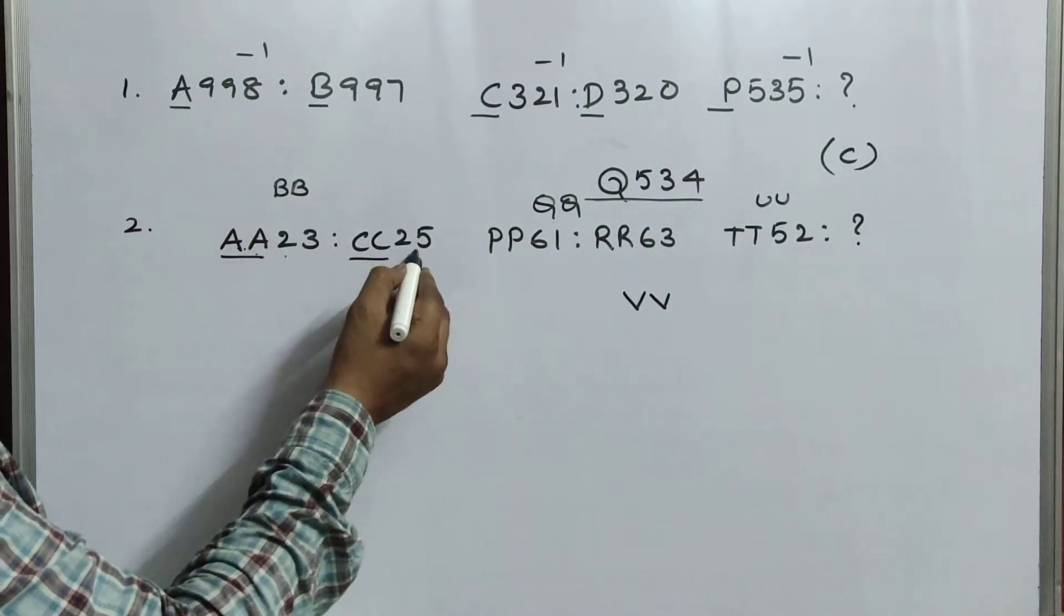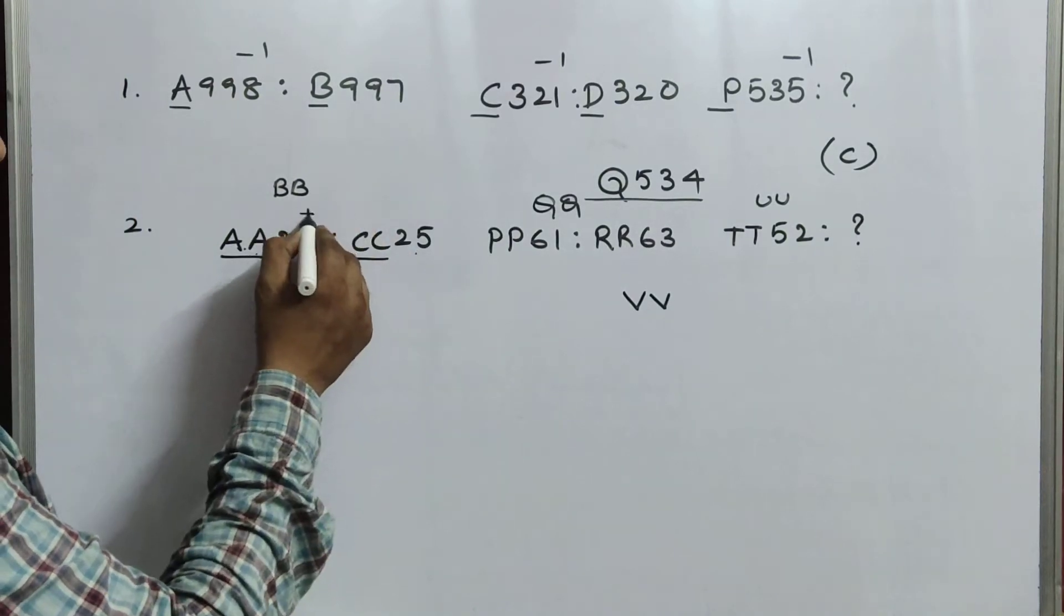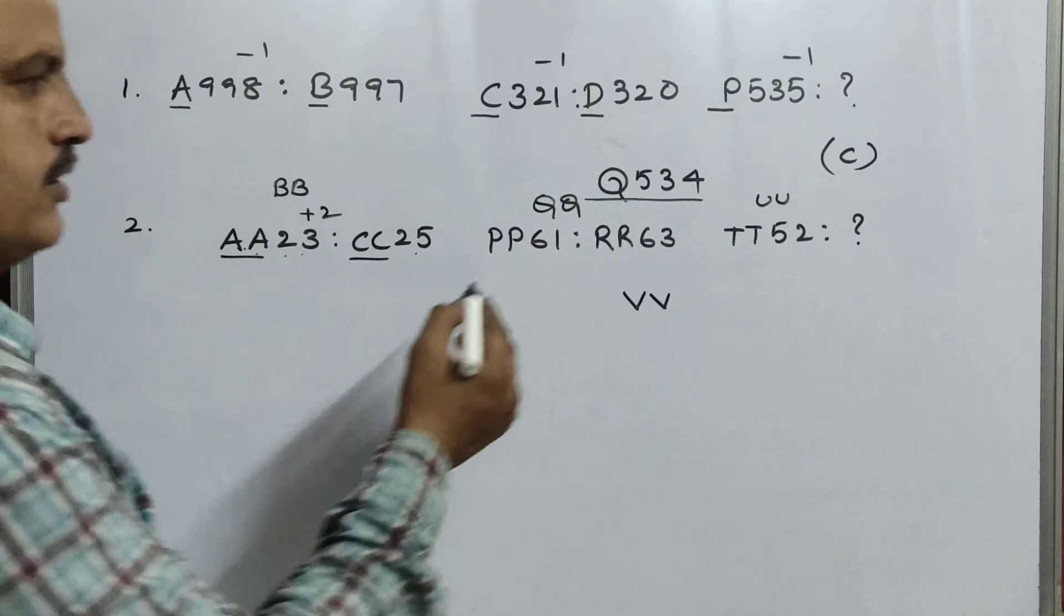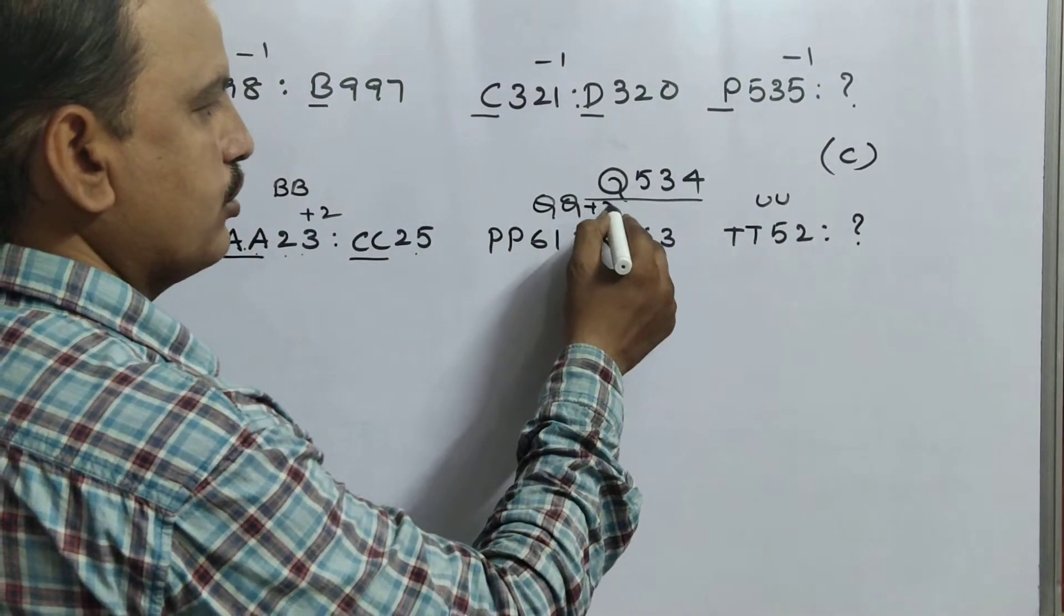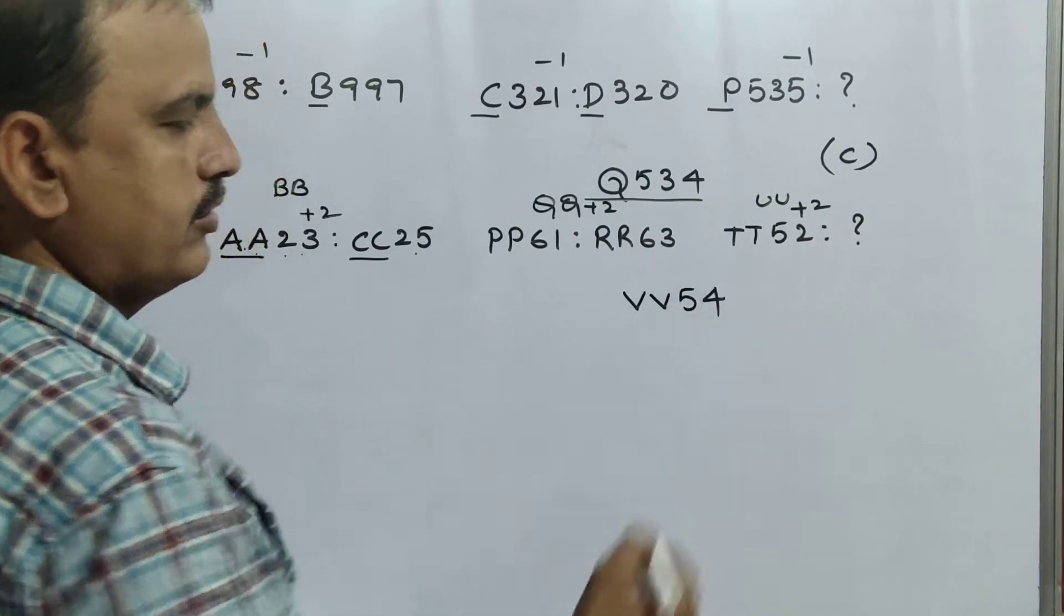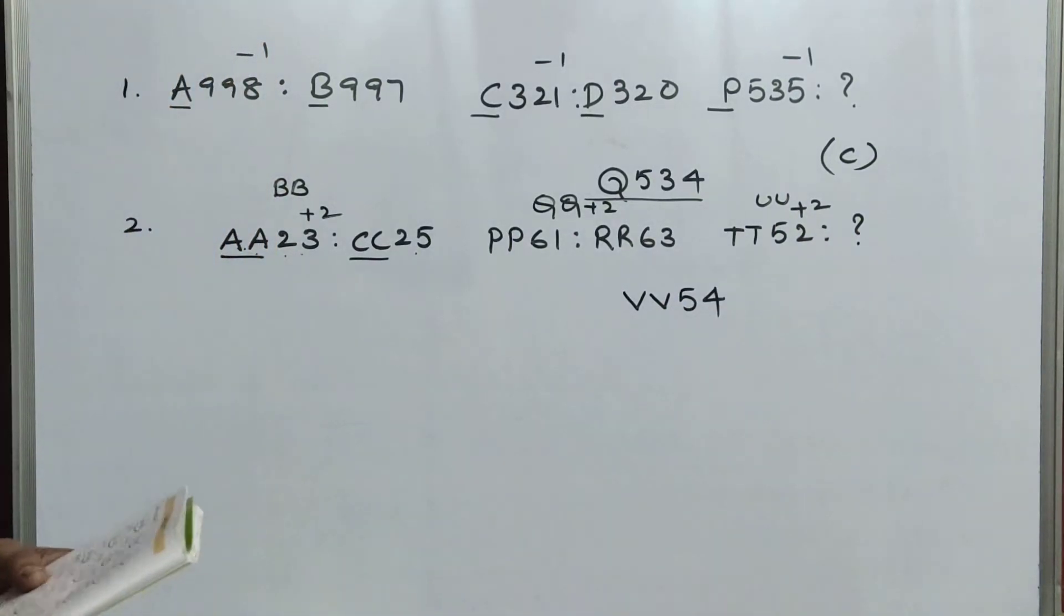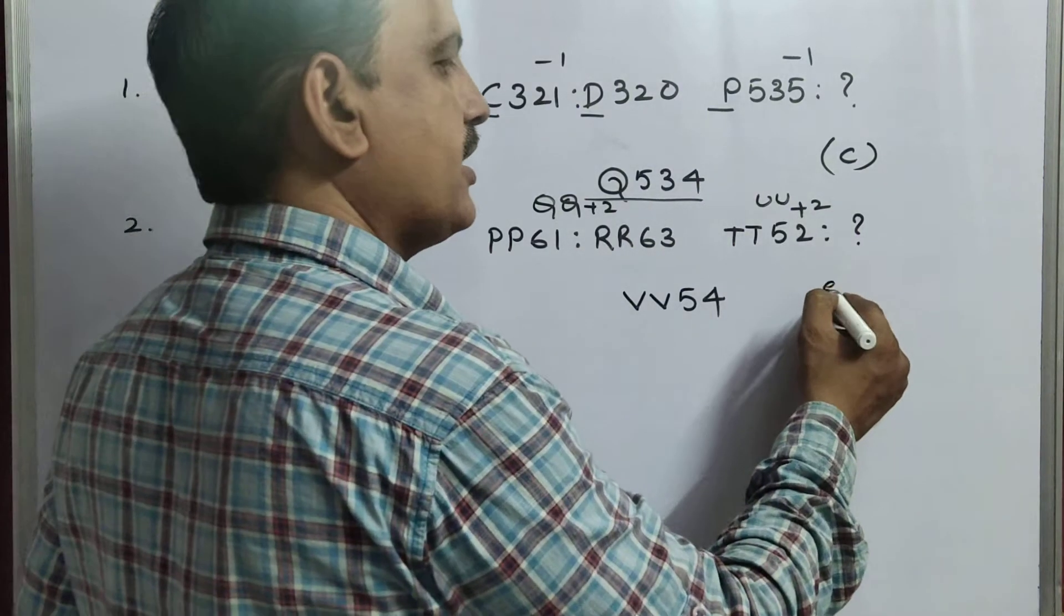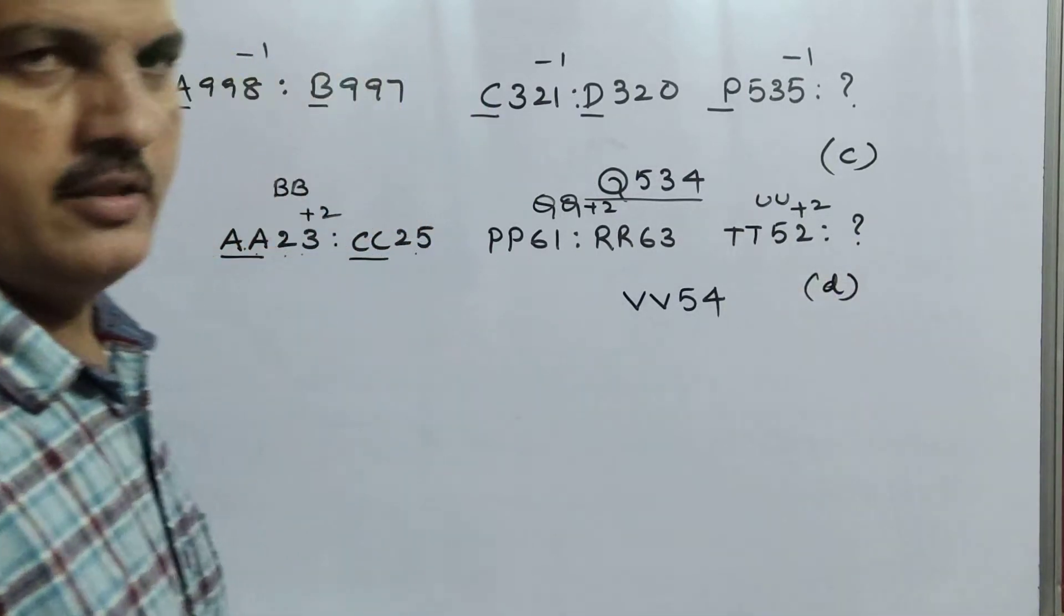Next, 23, here, 25. That means, here, plus 2. So, 23 plus 2 is 25. 61 plus 2, that is 63. 52 plus 2, that is 54. So, where is the option there? VV54. So, option D. Option D is the correct term.